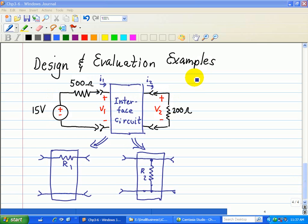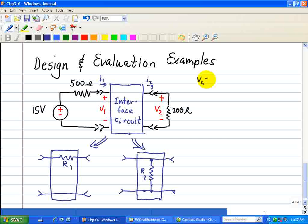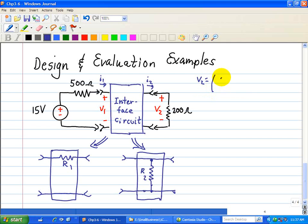So we see that V2, using voltage divider, is equal to 200 over 500 plus 200, and that gives us 12 volts. What this says is that the interface is required to reduce this voltage to the prescribed level of 5 volts.